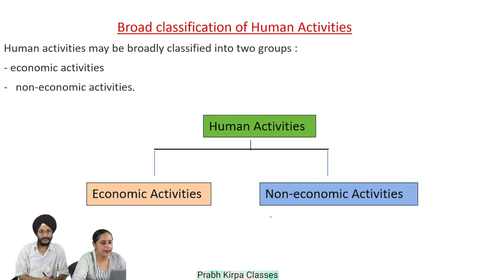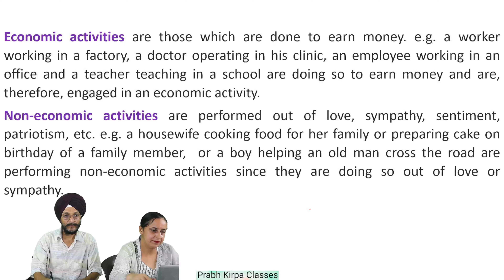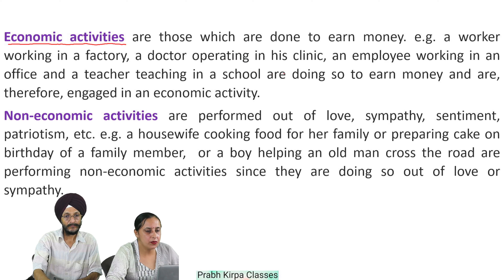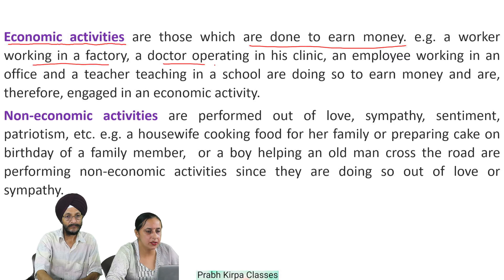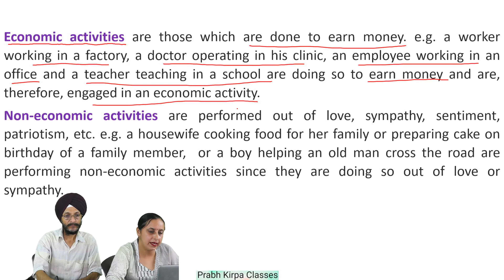Broad classification of human activities: Human activities may be broadly classified into two groups — first is economic activities and the second is non-economic activities. Economic activities are those which are done to earn money. For example, a worker working in a factory, a doctor operating in his clinic, an employee working in an office, and a teacher teaching in a school are doing so to earn money and are therefore engaged in an economic activity.